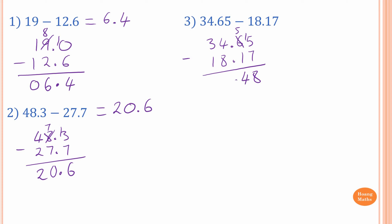The decimal point, of course, we write this down first. And 4 cannot take away 8, so you borrow 1 from 3 — the 3 becomes 2, and 4 becomes 14. 10 take away 8 is 2, and 4 is 6. And then 2 take away 1 is 1. So the answer is 16.48.